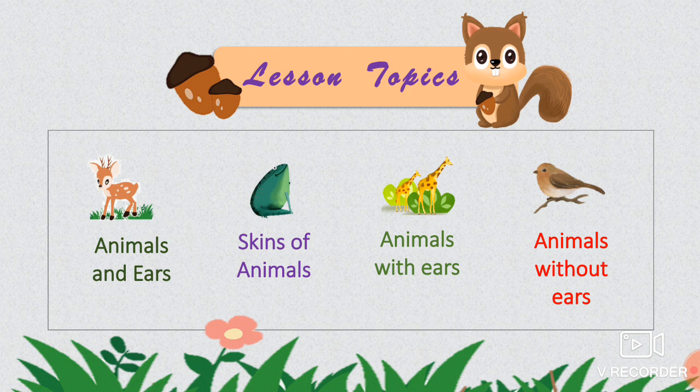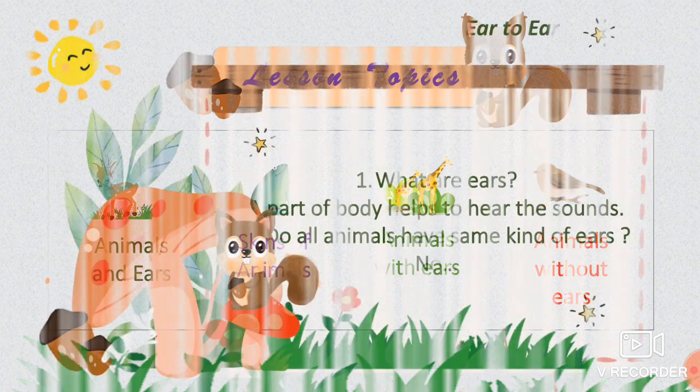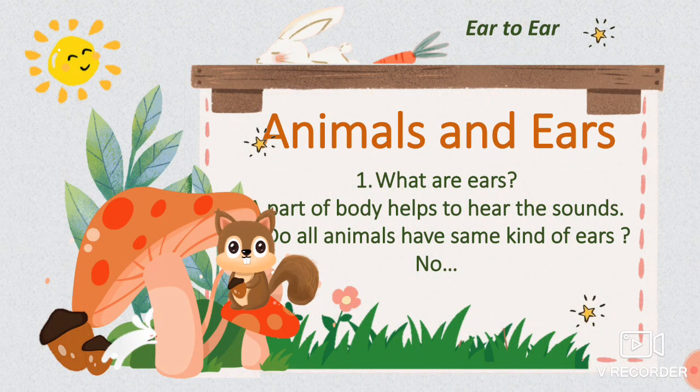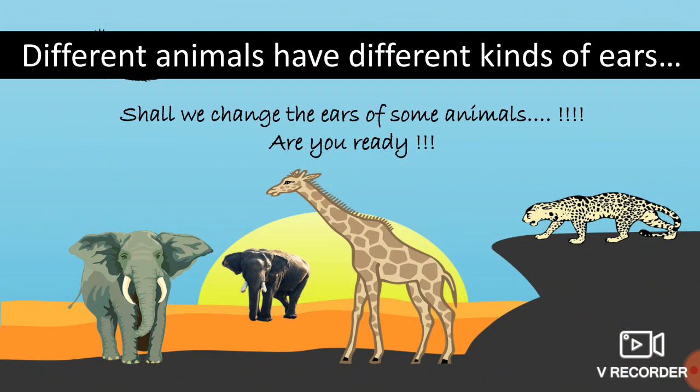How do animals have ears? How are they communicating? The first question: what are ears? Ears are a part of our body that helps to hear sounds. Do all animals have the same kind of ears? No, because every creature has different types of ears. But the purpose of ears — hearing sounds from the outside — is the same. I am going to show the ears of some animals, because different animals have different kinds of ears.